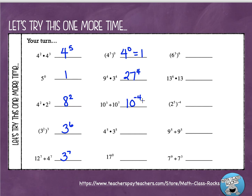Next example: different bases, same exponent, multiplication — multiply the bases and keep the exponent, giving twelve to the fifth. Then seventeen to the zero power equals one — any number to the zero power is one.